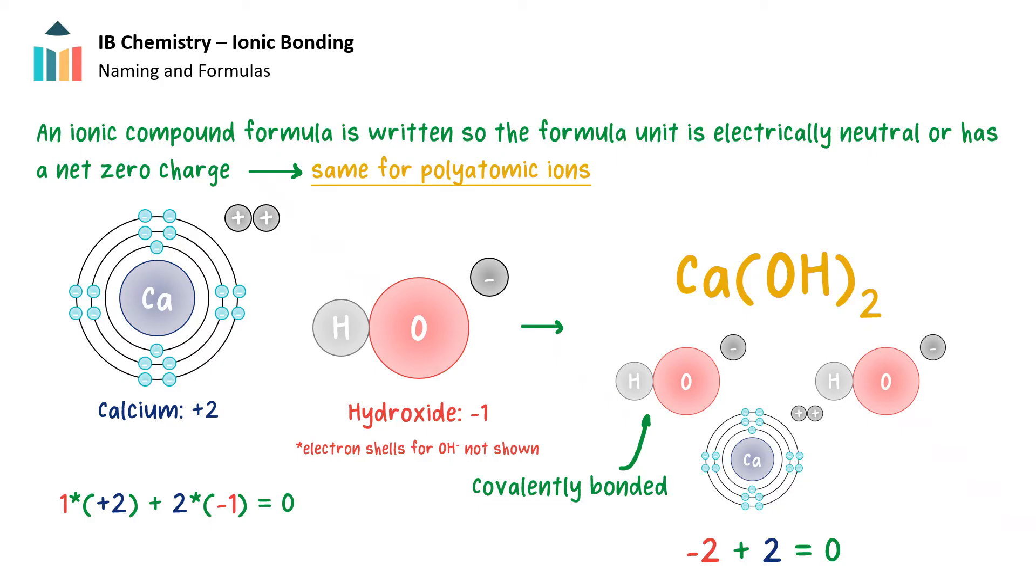The process of formula writing with polyatomic ions is the same as with monoatomic ions. The goal is a zero net charge within a formula unit. If a calcium ion with a +2 charge is combined with a hydroxide ion of a -1 charge, two hydroxide ions are needed to balance the 2+ charge of calcium.